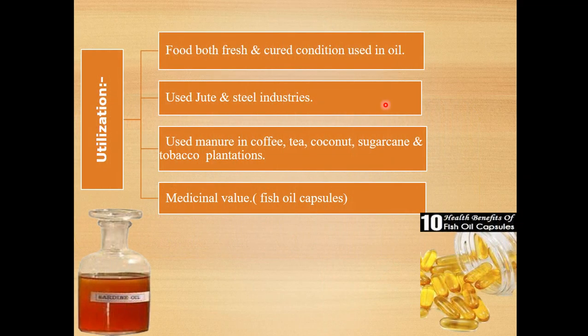The important uses of oil sardine: it is used as food in both fresh and cured condition. Its oil is used in jute and steel industries. It is used as manure in coffee, tea, coconut, and tobacco plantations. It also has significant medicinal value — the oil is used for persons suffering from skin diseases, eye diseases, and other ailments. The oil product of sardine is very valuable medicinally.